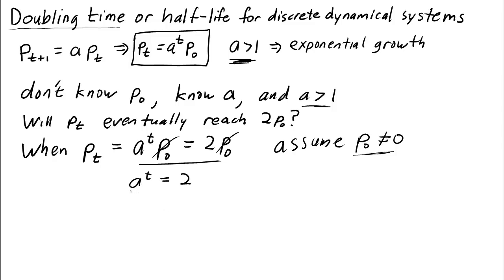Now remember, a is just a known number. What we want to find is the value of t, such that this is true. How do we solve this for t? We just take logarithms of both sides. I'll get log of a to the power of t equals log of 2.